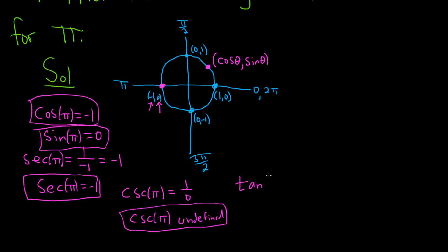How about tangent of pi? Tangent of pi, well, that's sine over cosine. So sine is 0, and cosine is negative 1. So it's 0 over negative 1, which is just 0. So the tangent of pi is equal to 0.